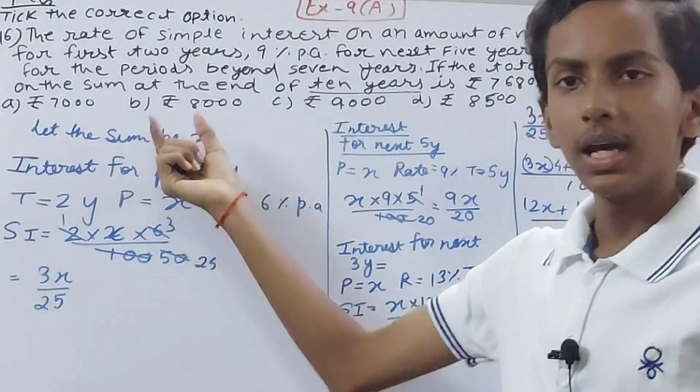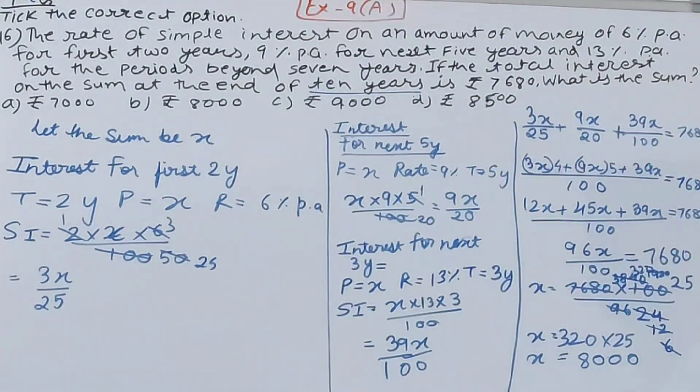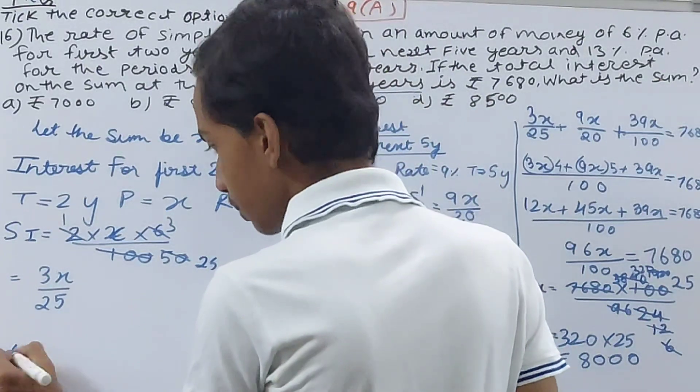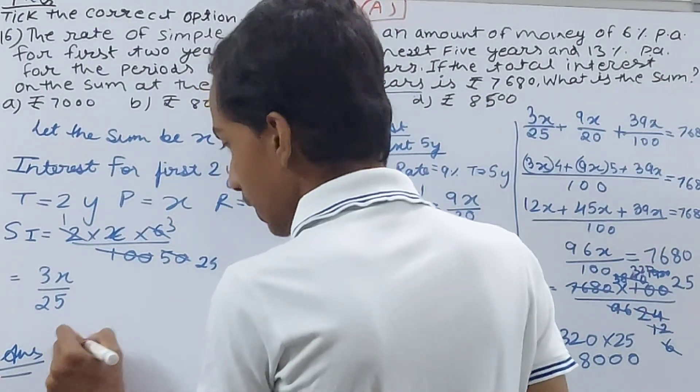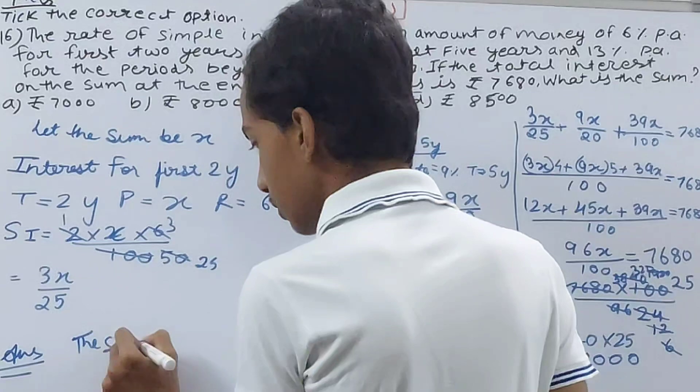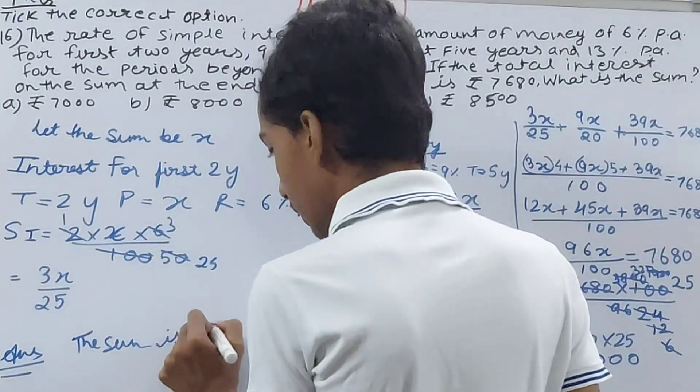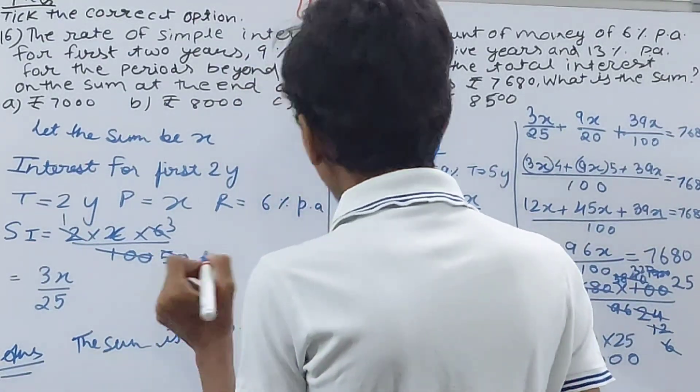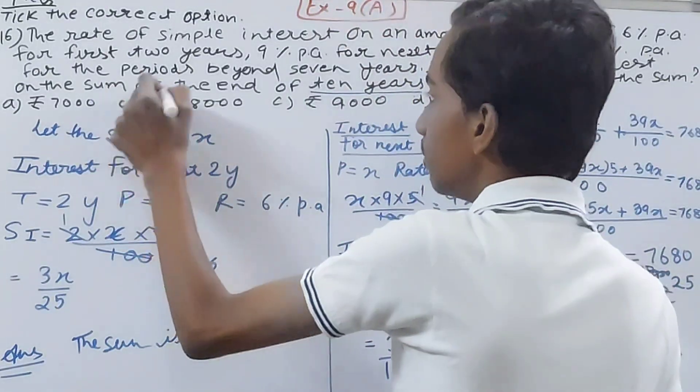What has been asked is what is the sum, and we have assumed let the sum be x. So I'll write the answer here because there is no space there. So the answer is that the sum is rupees 8000. Option B is correct.